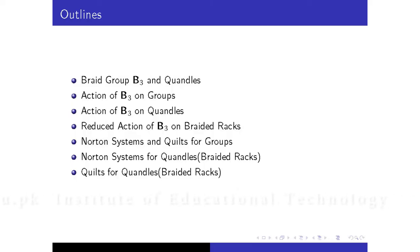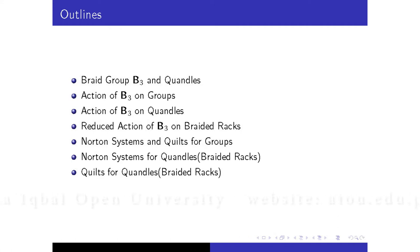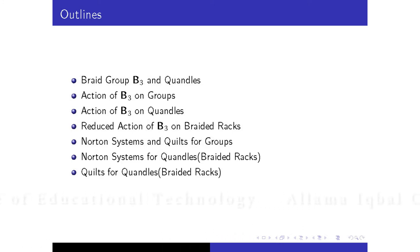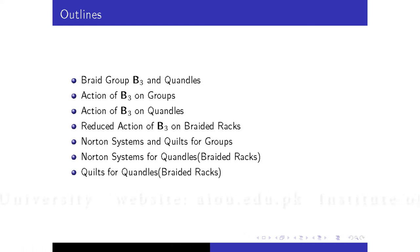These are the outlines. We will give a short introduction about braid groups, B3, quandles, the action of B3 on racks, and also the action of B3 on quandles. Then the reduced action of B3 on braided racks, Norton systems and quilts for racks, and in the last, Norton systems for quandles — quilts for quandles.